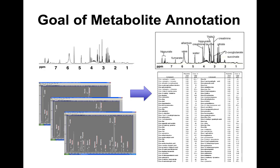We discussed this idea of going from spectra to lists — formally called metabolite annotation. Your spectrum starts unannotated, and when you finish, it is annotated. The annotation could be simply labeling feature one, two, three, or identifying a specific compound, or stating the compound and its intensity or concentration. All of those are examples of annotation.